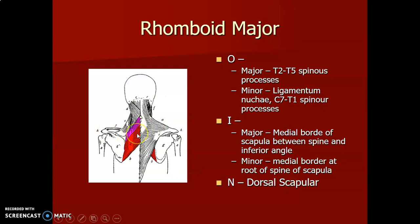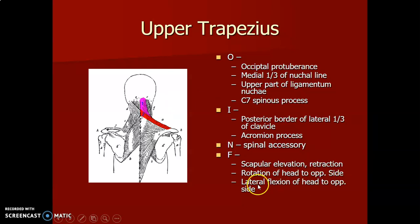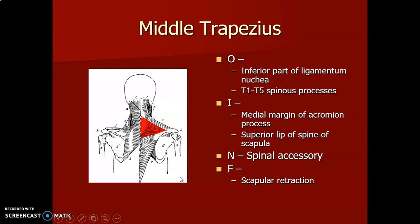Trapezius originates from the occipital protuberance, the medial third of the nuchal line, and upper part of the ligamentum nuchae down to C7 spinous process. The superior fibers insert on the posterior border of the lateral third of the clavicle and the acromion, innervated by the spinal accessory nerve. They cause elevation and retraction of the scapula, and rotation and lateral flexion of the head. The middle fibers originate from inferior parts of ligamentum nuchae and T1 to T5, insert onto the medial margin of the acromion and superior lip of the scapular spine, and cause retraction.